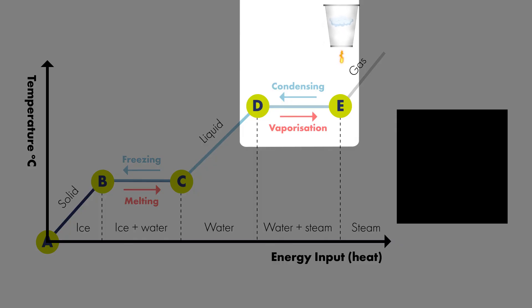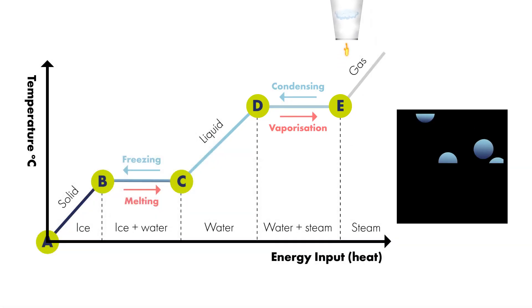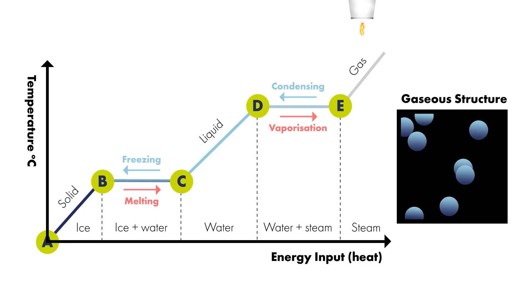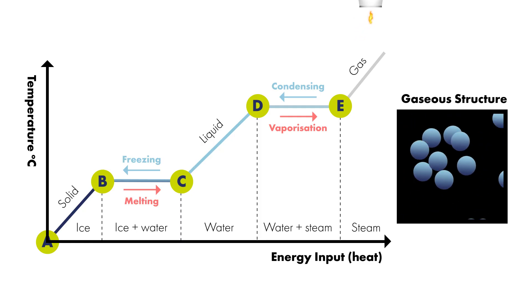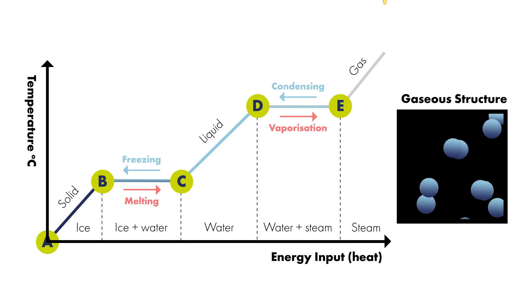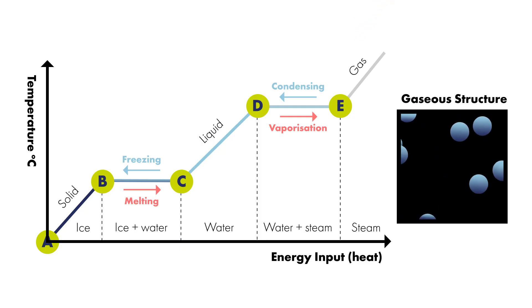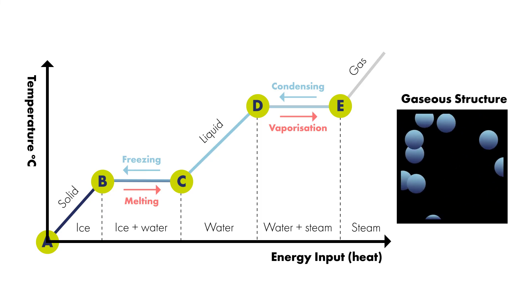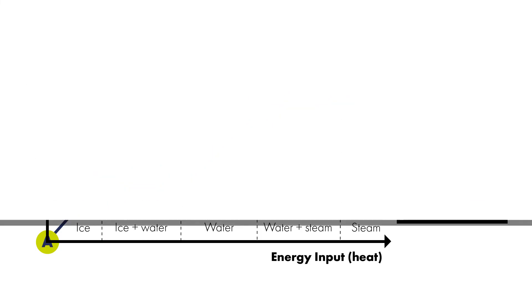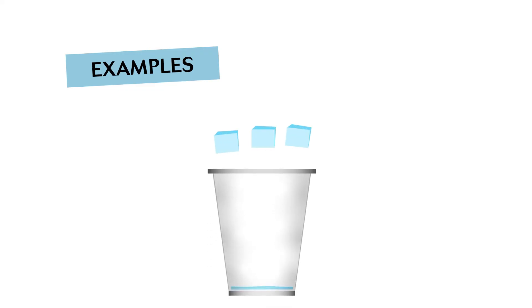Once in the gas state, if we were to continue heating further, the gaseous water or steam would now rise in temperature. Here are some examples of latent heat.